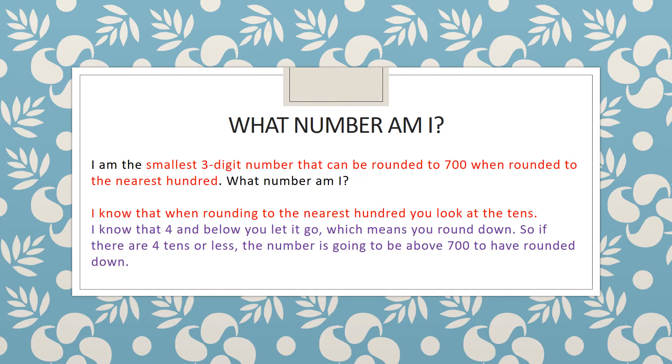I started off by pulling out the important information in red. So this is the bit that I need to know. I need to know what it means by the smallest three-digit number and what it means when it says can be rounded to 700 when rounded to the nearest hundred.